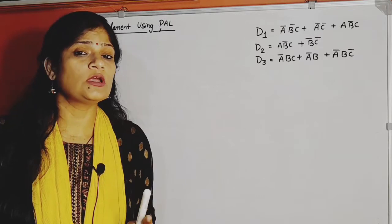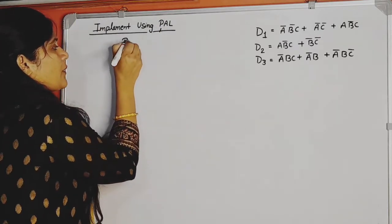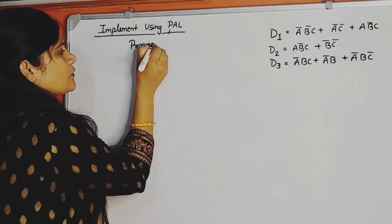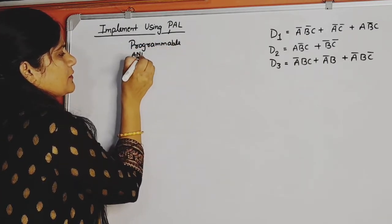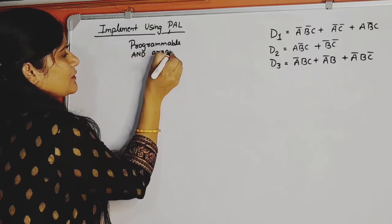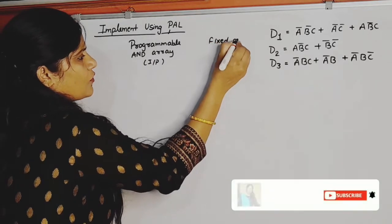Now in case of PAL, Programmable AND Array at input is done, and output side has fixed OR array. Okay, you got it? Output side fixed OR.